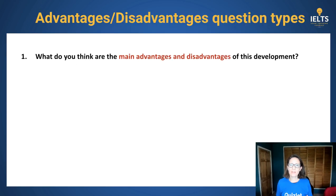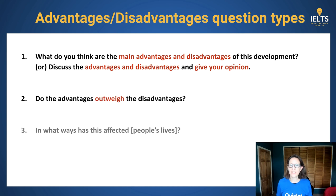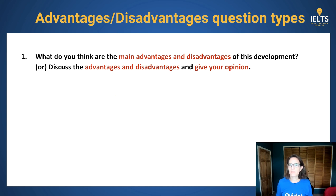First of all, look at the different types of question that you might get. The first one is probably the simplest — simply say what are the good things, what are the bad things.